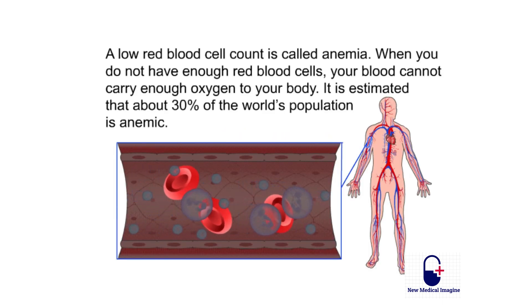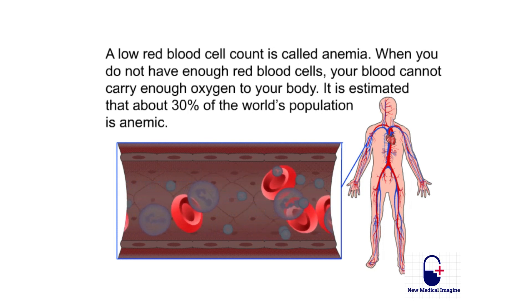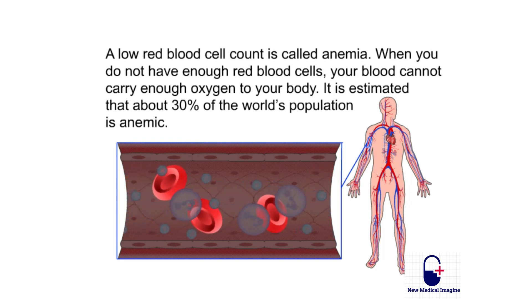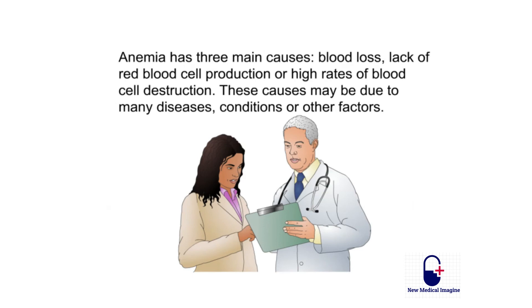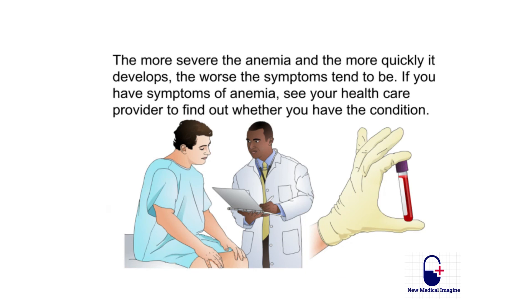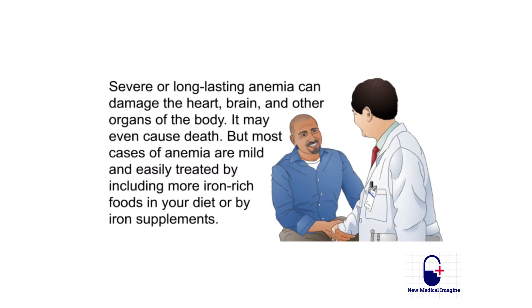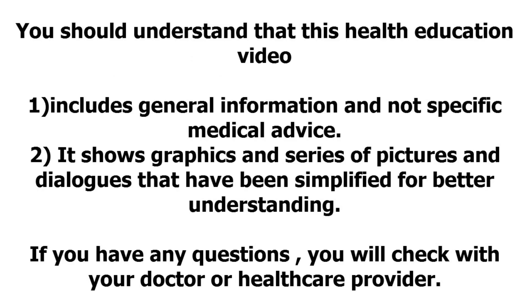In summary, a low red blood cell count is called anemia. When you don't have enough red blood cells, your blood cannot carry enough oxygen to your body. About 30 percent of the world's population is anemic. Anemia has three main causes: blood loss, lack of red blood cell production, or high rates of blood cell destruction. The more severe the anemia and the more quickly it develops, the worse the symptoms tend to be. If you have symptoms, see your healthcare provider. Most cases are mild and easily treated with iron-rich foods or iron supplements.